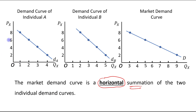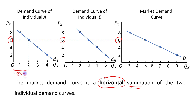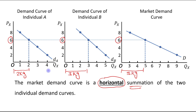I am taking an example by considering the price at rupees 6. At a price of rupees 6, the individual demand by consumer A is 2 kg. At a price of rupees 6, the individual demand by consumer B is 3 kg. And at a price of rupees 6, the market demand is 5 kg.